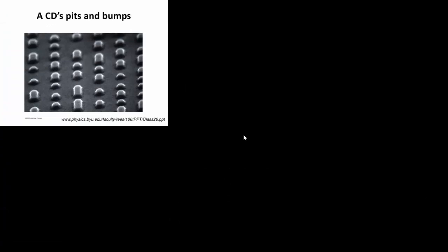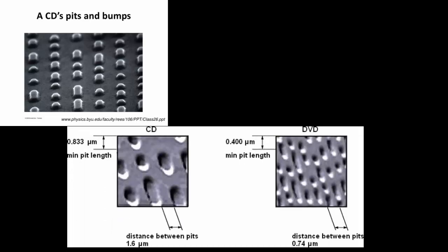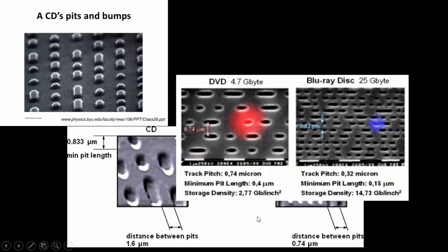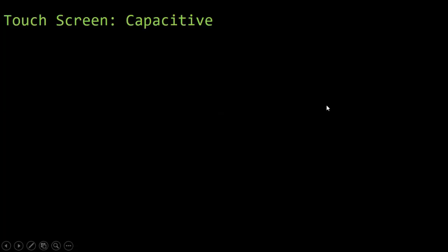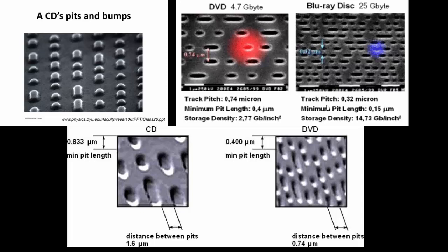DVDs and CDs both use a red laser. Blu-rays can store even more than DVDs because they use a blue laser, which can pack the pits and bumps even tighter together. The pits burned into the disk are read as ones, the bumps as zeros. A CD has pits and lands at 1.6 micrometers spacing. A DVD packs them tighter at 0.74 microns. A Blu-ray is even tighter at 0.32 microns. So they're really packed in there, allowing more data storage.